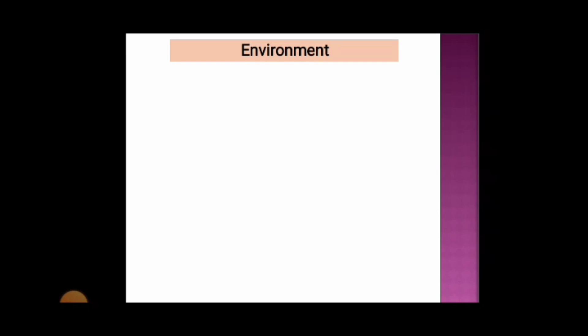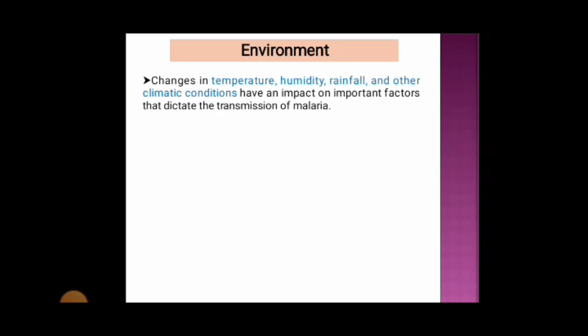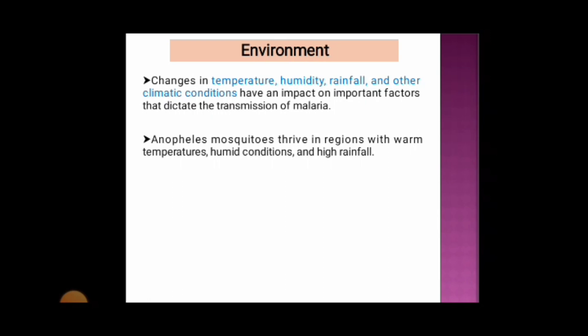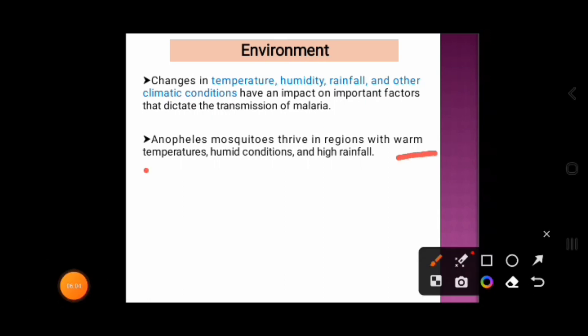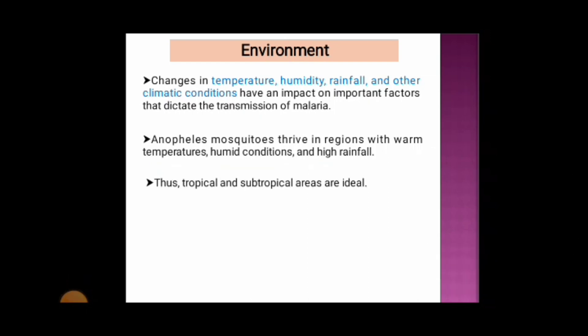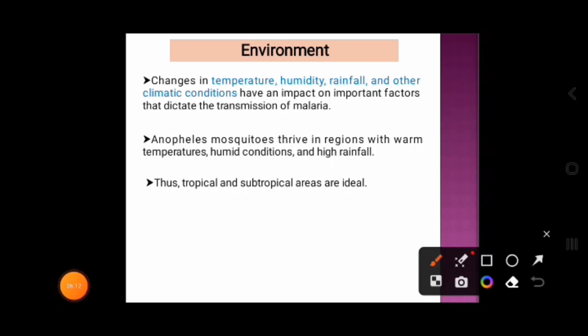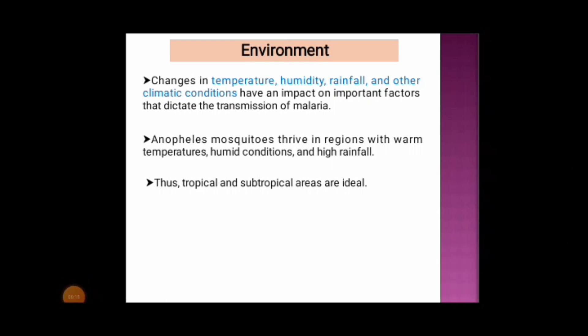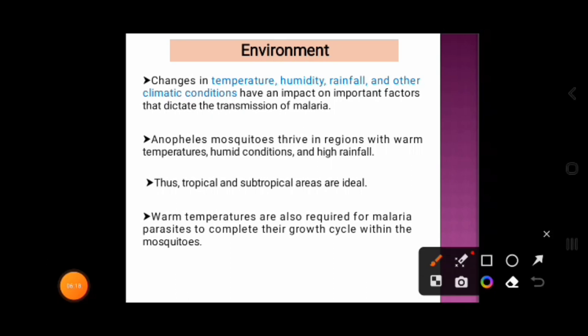The environment of malaria disease is influenced by changes in temperature, humidity, rainfall, and other climatic conditions. The Anopheles mosquito thrives in regions with warm temperature, humid conditions, and high rainfall. Thus tropical and subtropical areas are ideal for this disease. Warm temperatures are also required for the malaria parasite to complete its growth cycle within the mosquito.